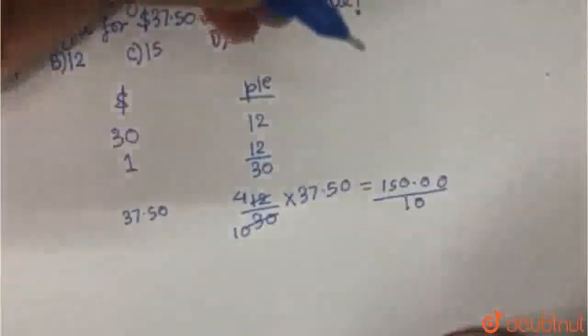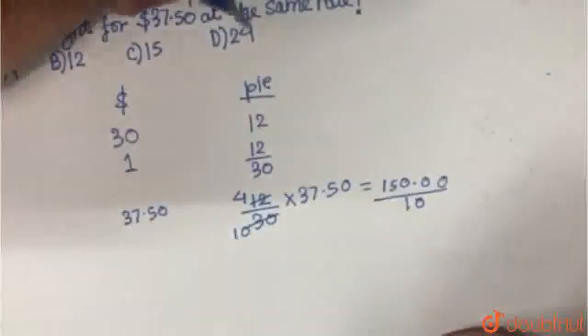4 threes are 12 plus 3 is 15. So this will come out to be 150 upon 10. And how much is 150 upon 10? 150 upon 10 is nothing but 15.